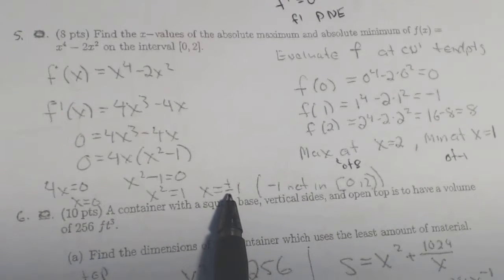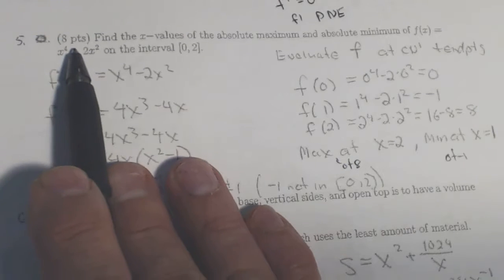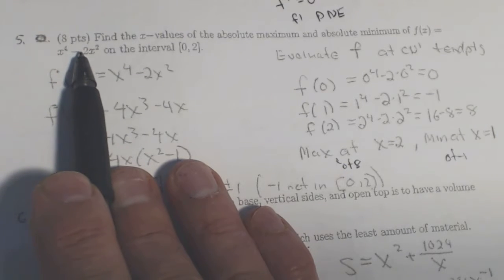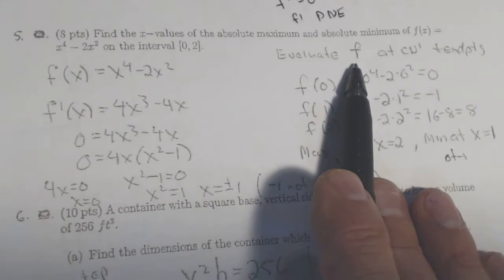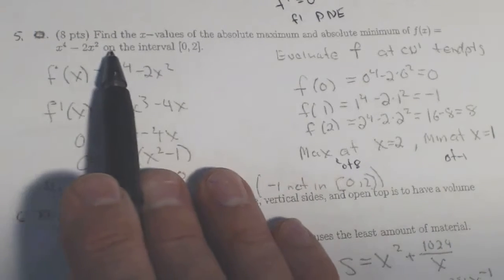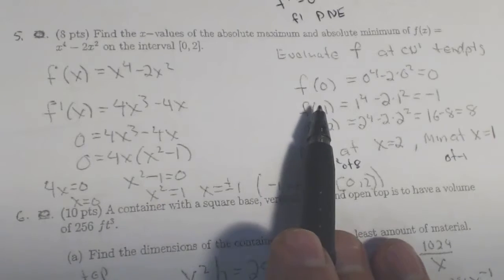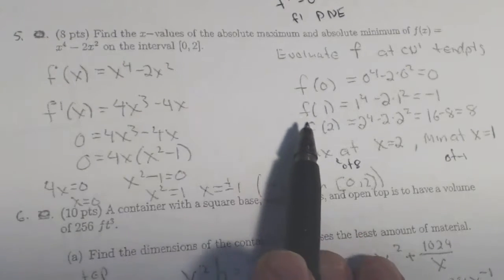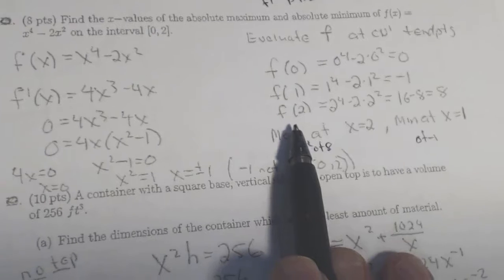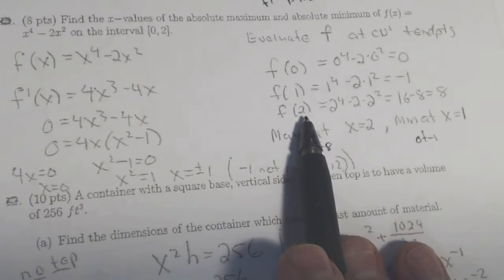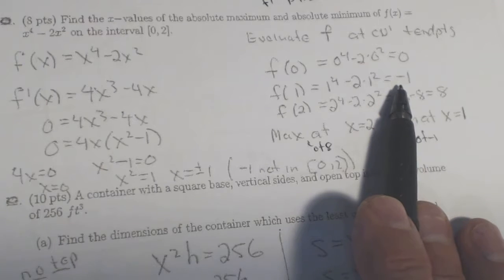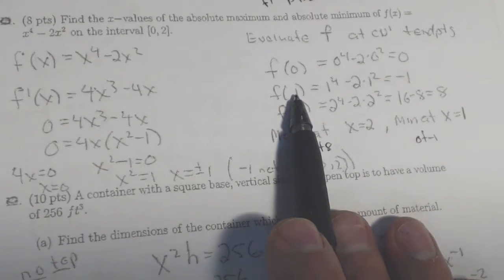So I evaluate the original function. The original, that's the key. Some of you are sticking your values back in the derivative, because you want the max min of the original function. So we're going to stick the 0 into x to the 4th minus 2x squared, and then the 1 into that function, and then the 2 into the original function. And we're going to find the biggest value is 8, which occurs at x equals 2, and the smallest value is negative 1, which occurs at x equals 1.